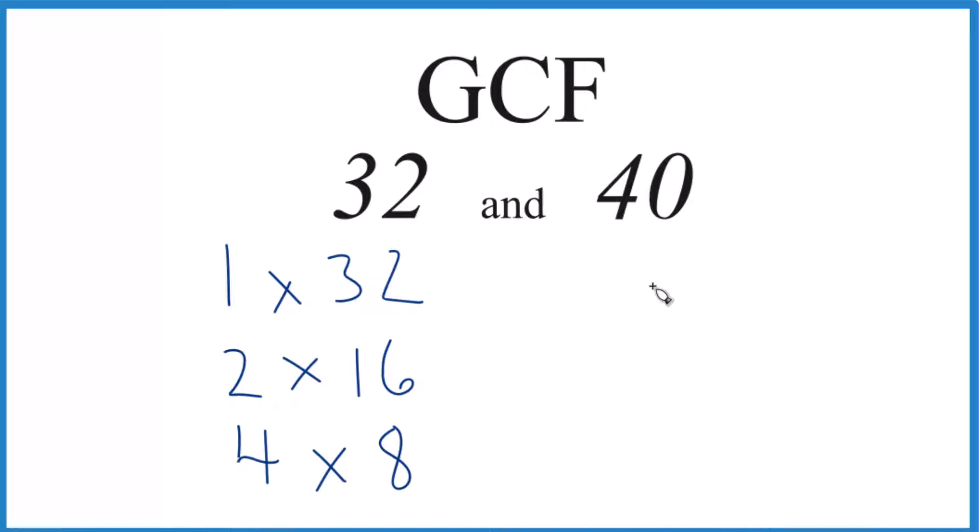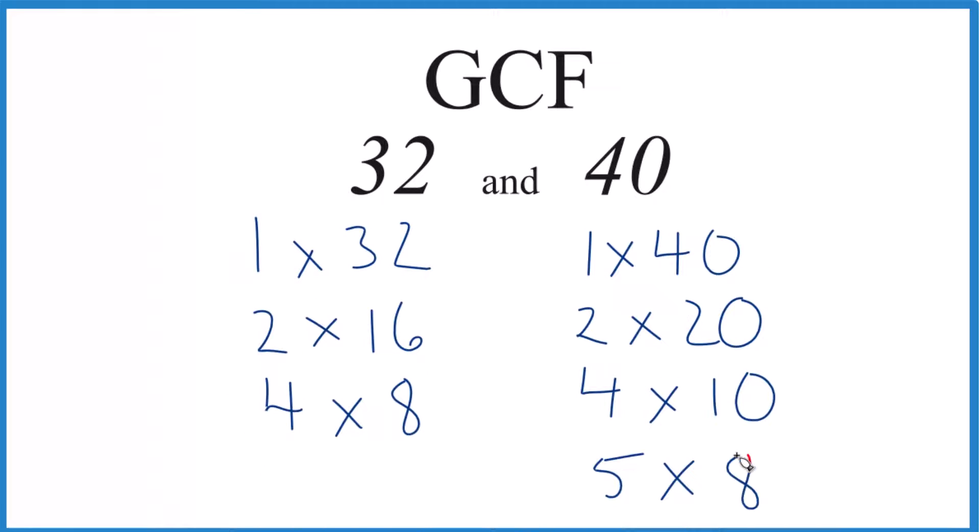For 40, you could have 1 times 40, and then 2 times 20, 4 times 10, and then 5 times 8. I think those are the factors for 40.